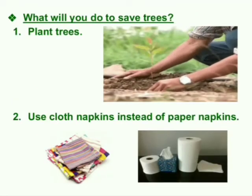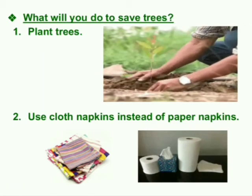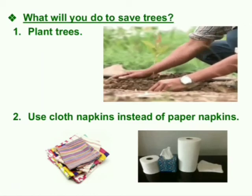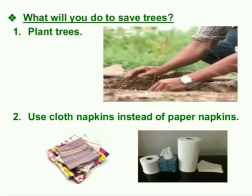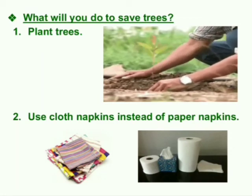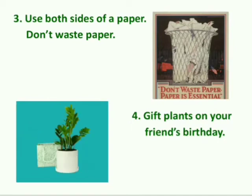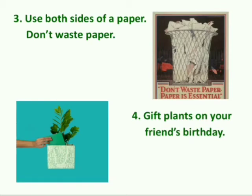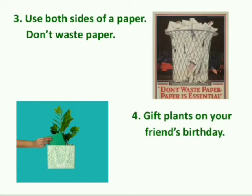Next, what will you do to save trees? Number one, plant more trees. Number two, use cloth napkins instead of paper napkins — this way you can save paper, because paper is made from tree pulp. Three, use both sides of a paper; don't waste paper. Number four, gift plants on your friend's birthday. This you should definitely try — this way you will actually be spreading a message to protect our environment. Isn't it amazing?